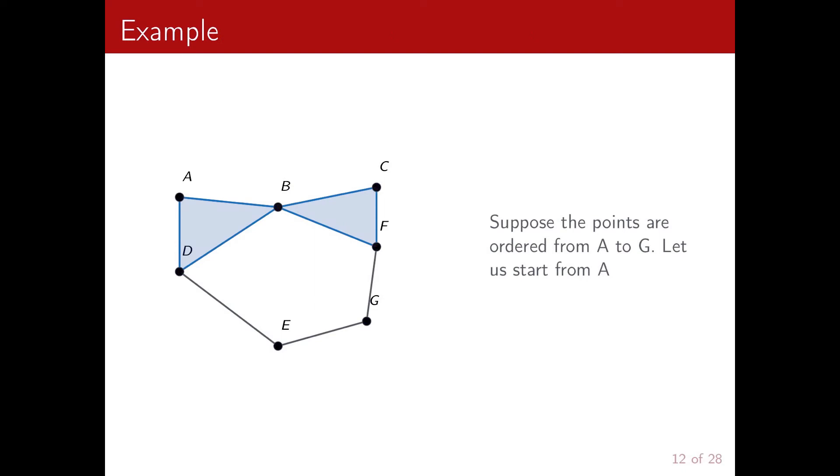So let me start with an example. We consider a collection of points, and we suppose that they are ordered, so in this case ordered from A to G. And the order is very important because what we want to do at each iteration is consider only one point and the points that came after it in the order.